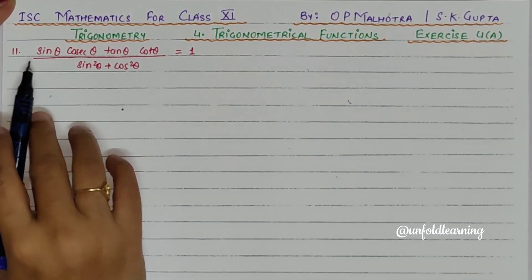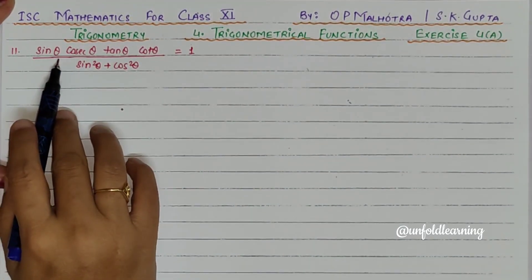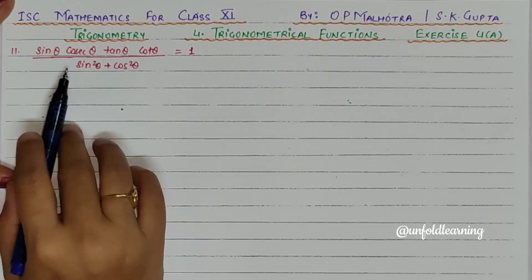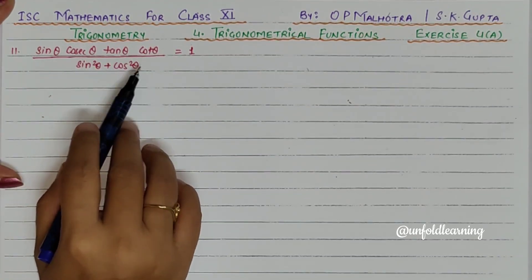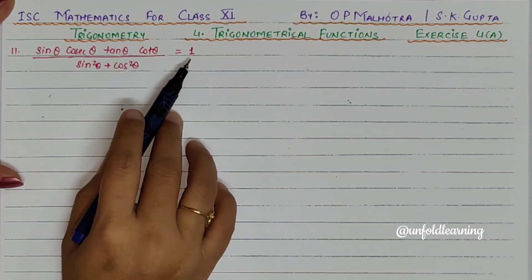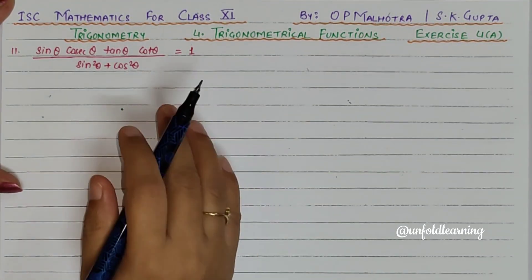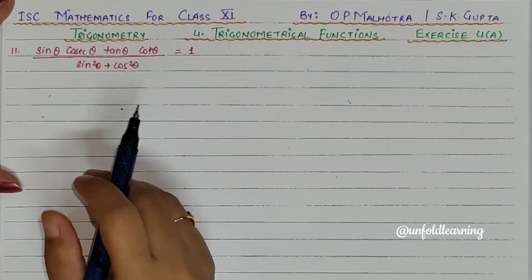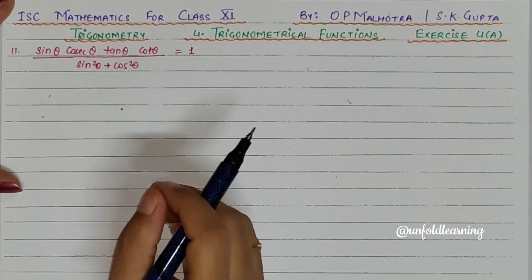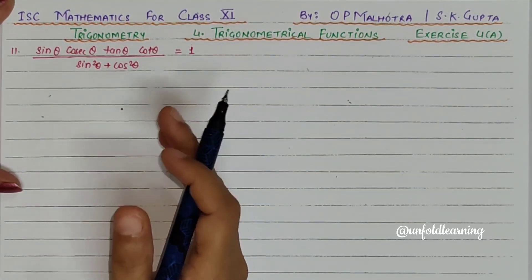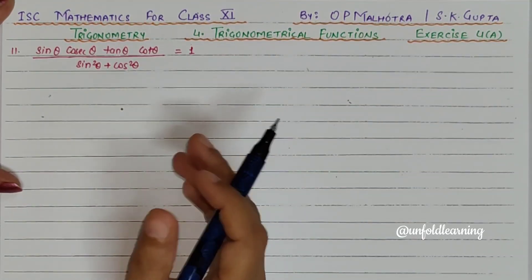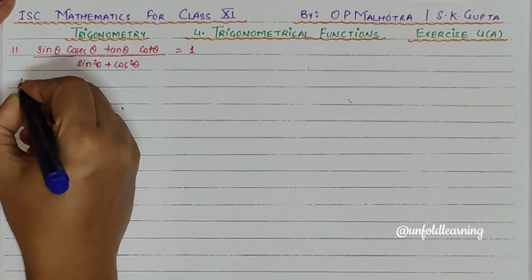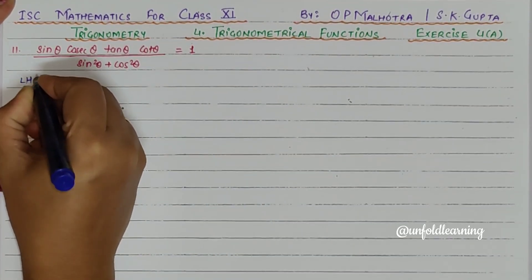Question number 11 says: sin θ · cosec θ + cos θ · sec θ, whole upon sin²θ + cos²θ, is equal to 1. Like we were doing the previous question with the circle method, now I will do the rest of the questions with a simple method. If you want, you can do it with the circle method. So taking LHS.